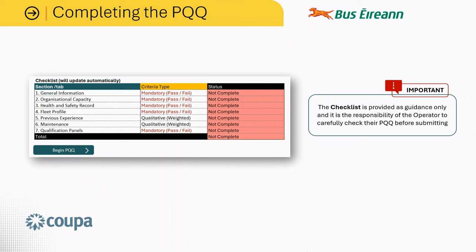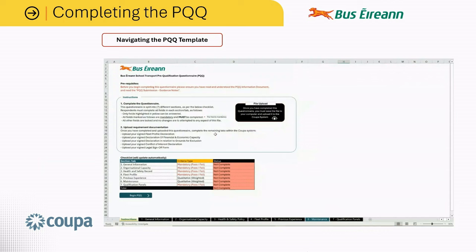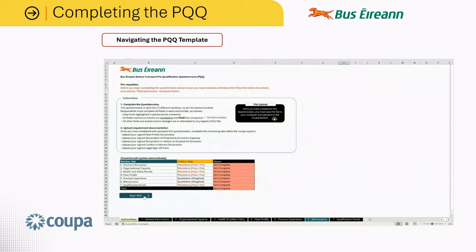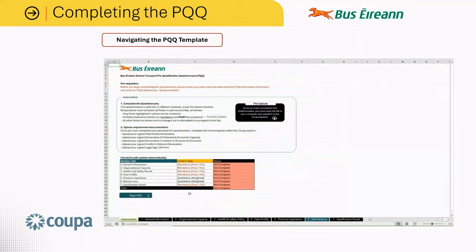To begin the questionnaire, simply click the begin PQQ button. To navigate the questionnaire or go to the relevant section, you can use the navigation buttons at the bottom of each page. These buttons will take you to the previous section, the next section, or back to the instructions page. If these buttons are not working or you prefer not to use them, you can simply click on the relevant tab at the bottom of each page to go to the respective section.